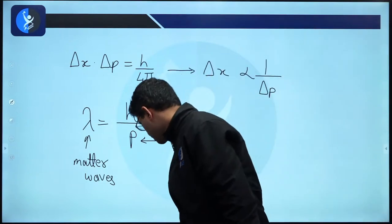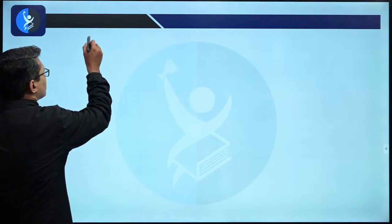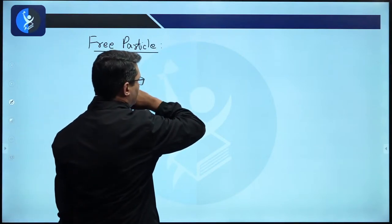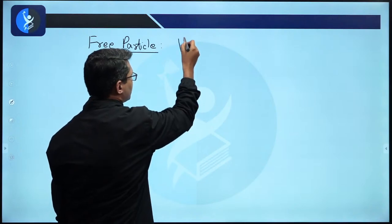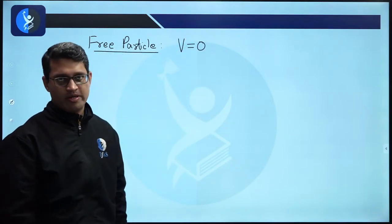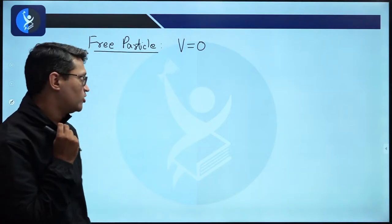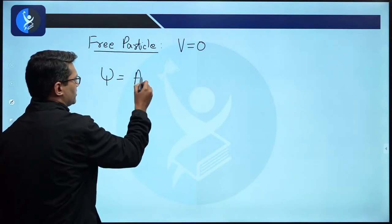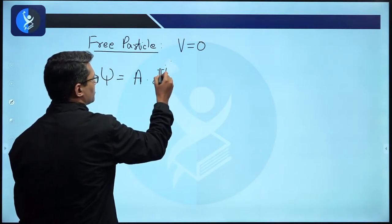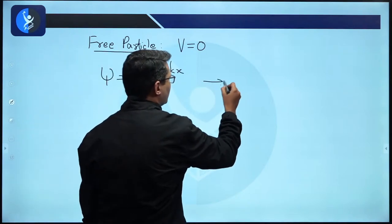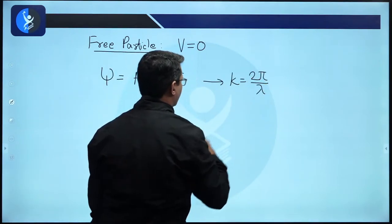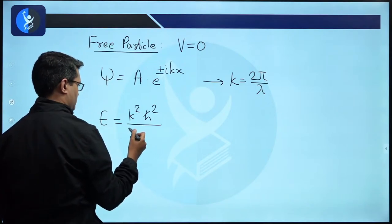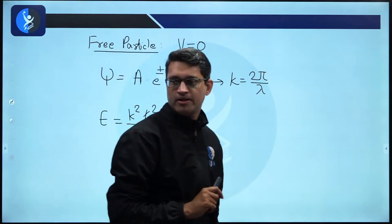In the last class we also discussed the free particle system. The free particle tells us that potential energy is zero, meaning no force is applied. As a result, the wave function is A times e raised to plus or minus iKX, where K equals 2 pi over lambda. The energy comes out to be K squared times h-cross squared upon 2m.